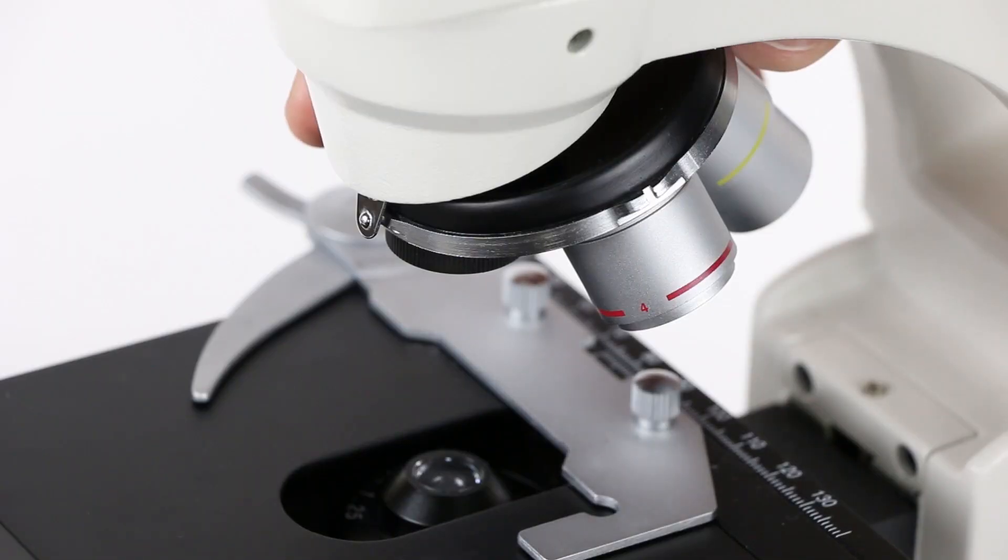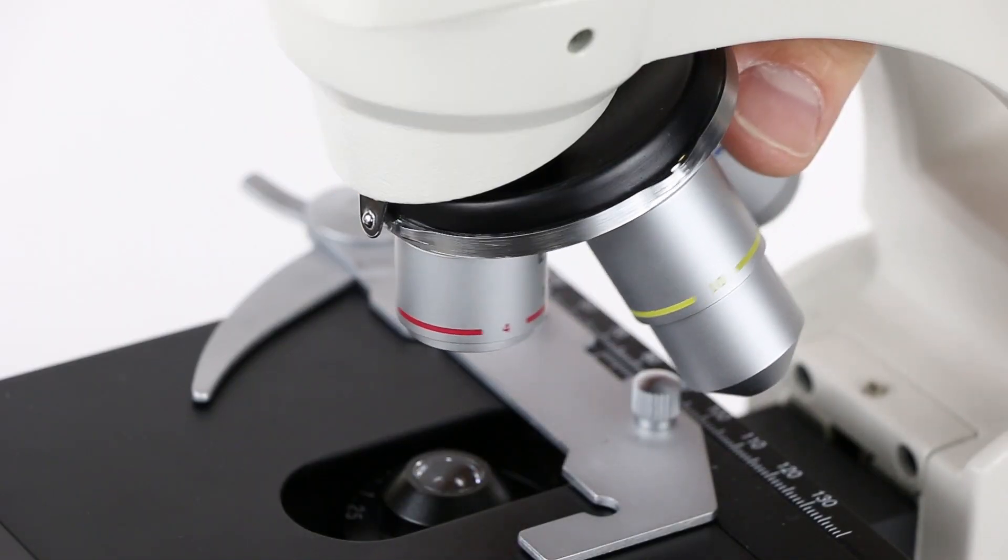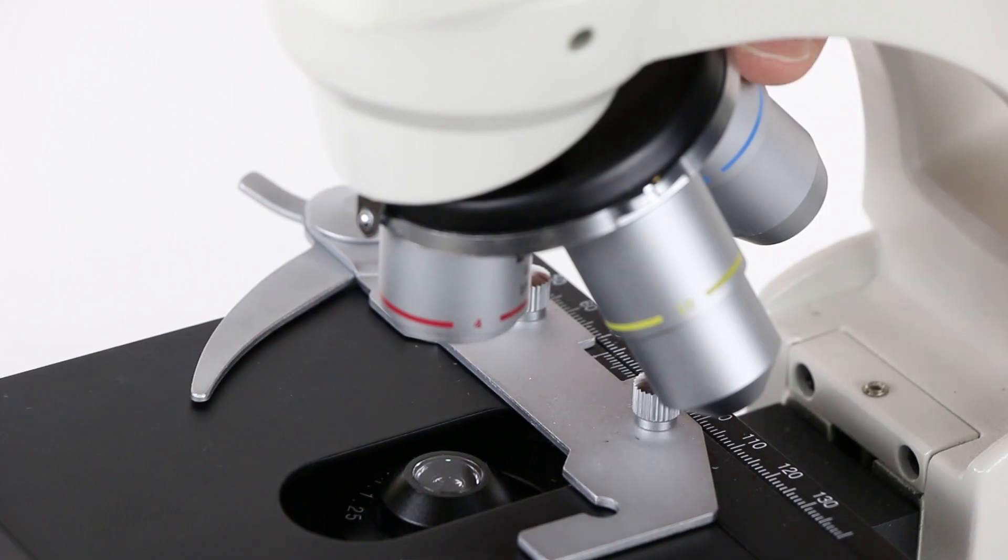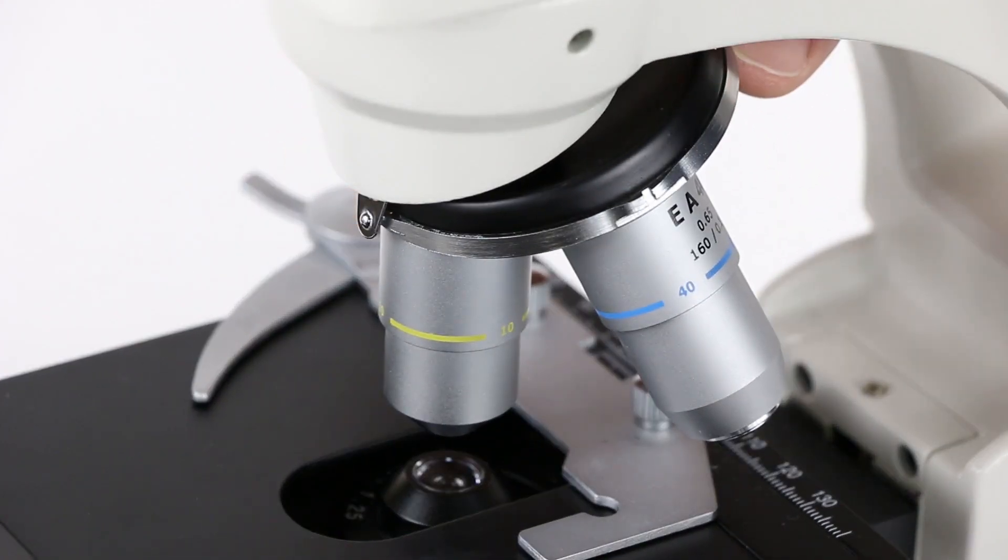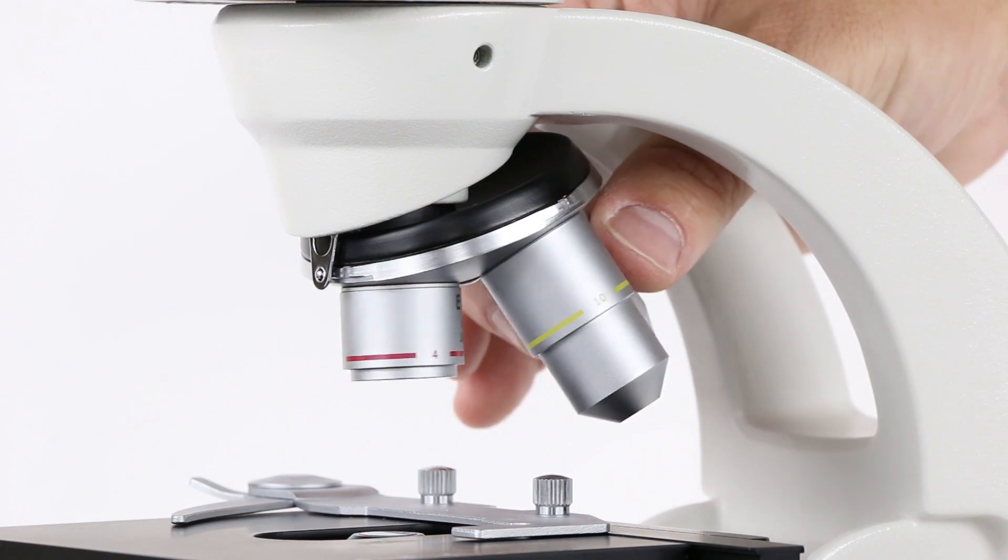Then, above the stage here, we have this revolving turret that's called the revolving nose piece. And as you can turn this, you can select different lenses. These lenses are known as objective lenses.